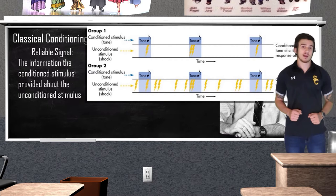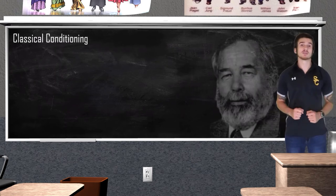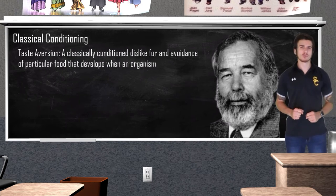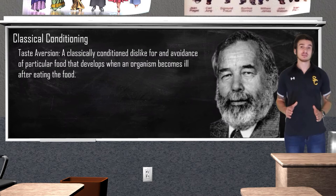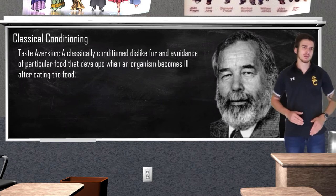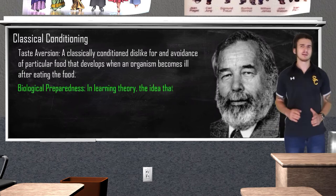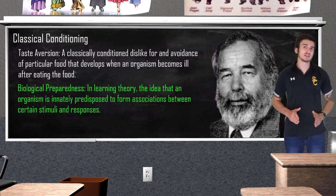Rats in both groups were actively processing the reliability of the signals they received, leading to cognitive influences in their conditioning. In the 1950s, psychologist John Garcia tested how the concept of taste aversion was related to classical conditioning. Garcia gave rats flavored water that would make them feel ill, and after the rats recovered, he noticed the rats would not go anywhere near this flavored water. Garcia's research showed that certain stimuli are much easier to form an association with than others, because organisms come equipped with something known as biological preparedness — the idea that an organism is innately predisposed to form associations between certain stimuli and responses.